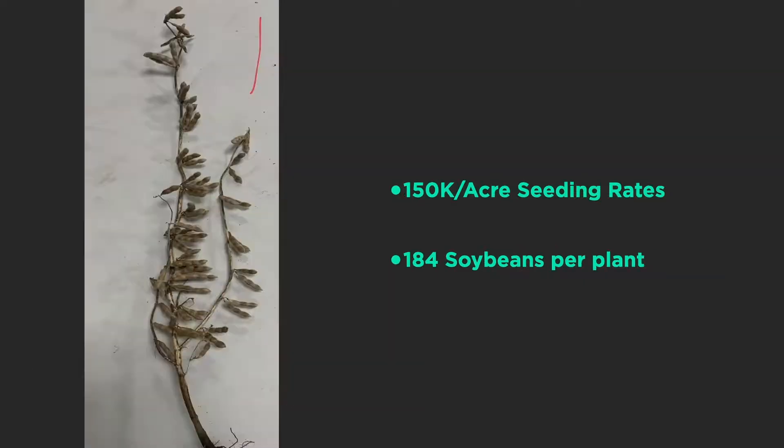At 50,000 seeds per acre, we've got 450 soybeans on this plant. Going back to the 150,000 plant — it only has 184 total beans. So this is what we're trying to do at PTI: research what is the right population and the right variety of soybeans that will offer this lateral branching to promote more beans per plant.